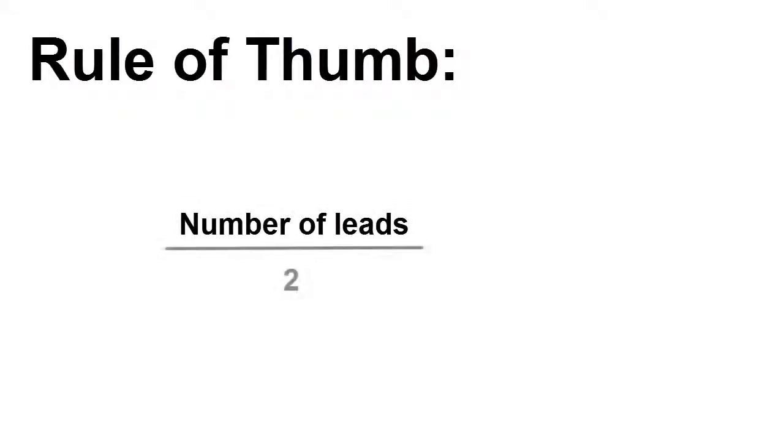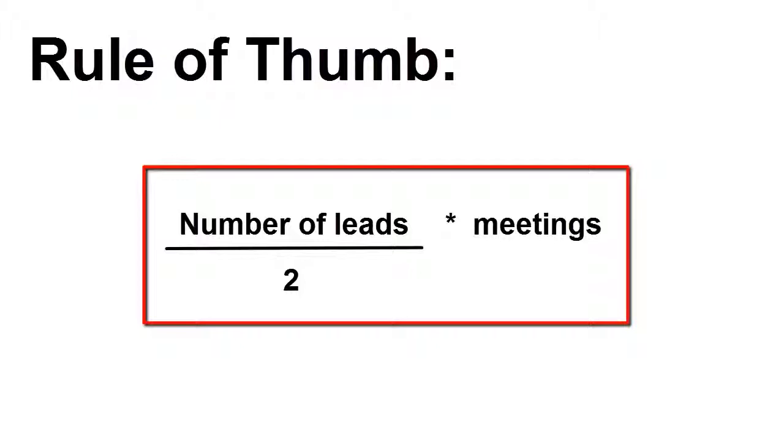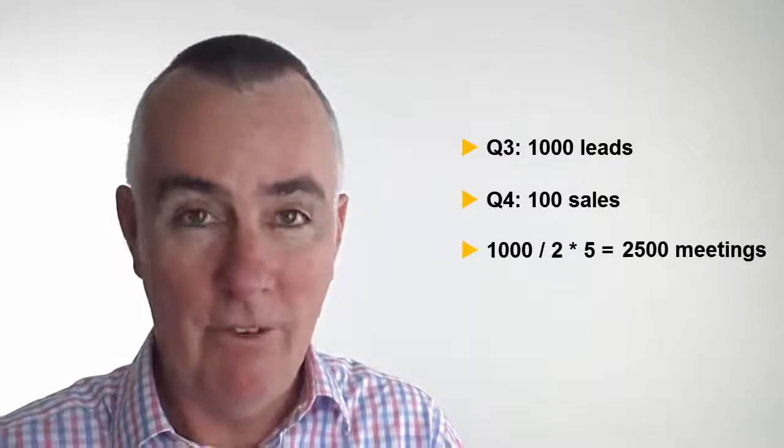Then it gets a bit tricky around leads. Here's my basic rule of thumb: take the number of leads — in this case it was 1,000 — halve it and multiply that by the number of meetings that it's going to take, on the assumption that half of your leads require that quantum of meetings. Some leads need a couple of meetings and they bail. Some of those leads need all five meetings. Just halve it. It's not accurate — I've got a much better model for you a little bit later on — but let's stick with the basics. Propose-to-close ratio, lead-to-proposal ratio, it takes 13 weeks to make a sale. So we need 1,000 leads in Q3 to make 100 sales in Q4, and we're going to chew up about 2,500 meetings across that period. There's the meat of it.